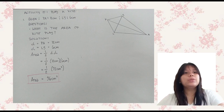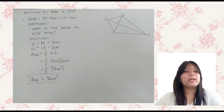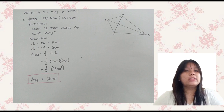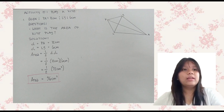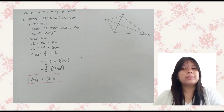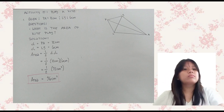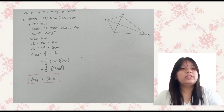Question 2: What theorem justifies your answer? The theorem that justifies this calculation is the Diagonal Theorem for Kites. According to this theorem, the area of a kite equals half the product of its diagonals — that is, one-half times diagonal one times diagonal two. This theorem validates the calculation method and confirms that the area obtained using the formula is accurate.